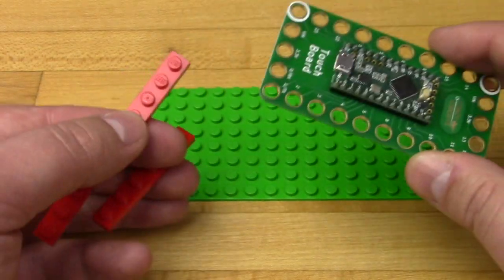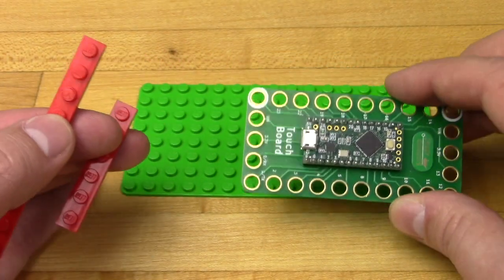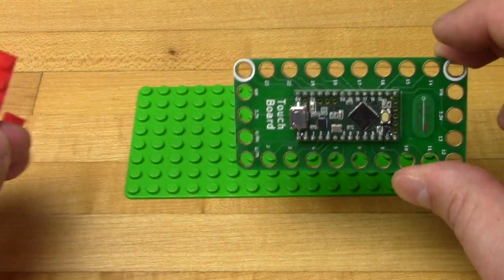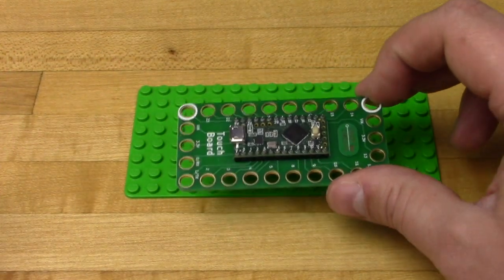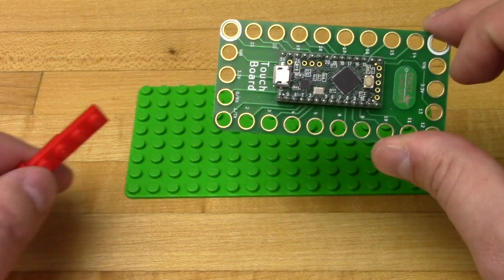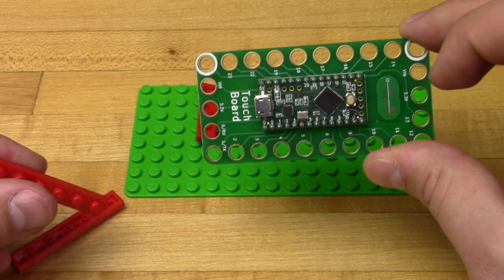As the brains of this project, we'll be using a crazy circuits touch board. Now it is Lego or brick compatible. However, the Lego holes don't go all the way through the board. So we'll be using some red 1x6 and 1x8 Lego pieces to make a bit of a platform for it.